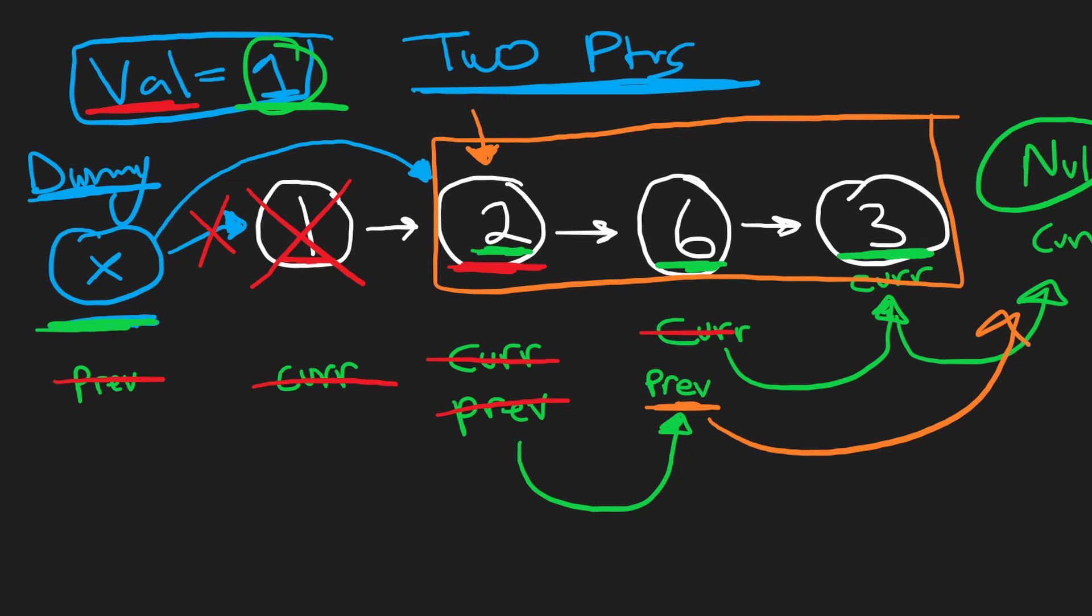We kept shifting them until they got to the end of the list. That's one of the reasons why we created this dummy node. Notice how the dummy node points exactly where we want it to point. It points at the new head of the linked list. So what we're going to do in our algorithm is return dummy.next.